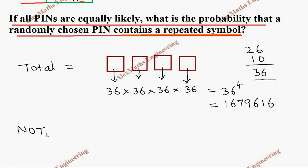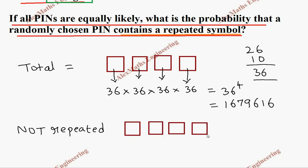To find the number of non-repeated PINs, we again make 4 boxes with 36 total options. In the first box we have 36 chances. Since it cannot repeat, whatever we use in the first box cannot be used again, so the choices reduce by 1 each time. The second box has 35 options, the third has 34, and the fourth has 33.